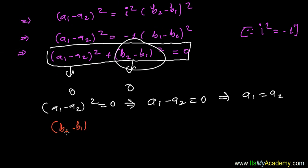And from this second condition we have (b2 minus b1) all square equals to zero, that gives us b2 minus b1 equals to zero, and finally that leads us to b2 equals to b1.